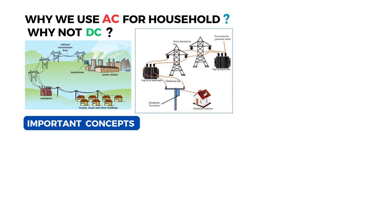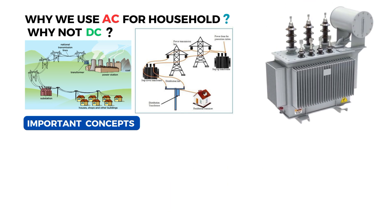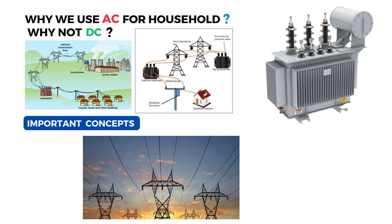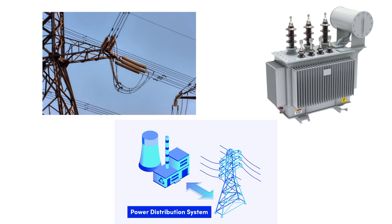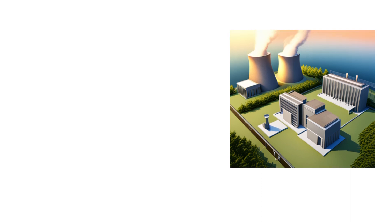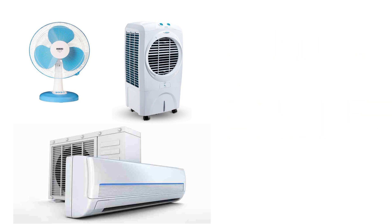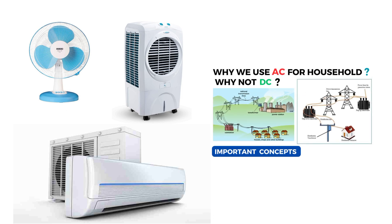Now let's come to the main reason why we use AC instead of DC at home. The reason is the transformer. When power is transmitted from a generating station, we need to step up the voltage, because transmission requires high voltage through transmission lines. We know that a transformer runs only on AC — it cannot run on DC. That's why the majority of appliances in our home are made for AC only. This is the main reason for using AC in place of DC for household purposes.